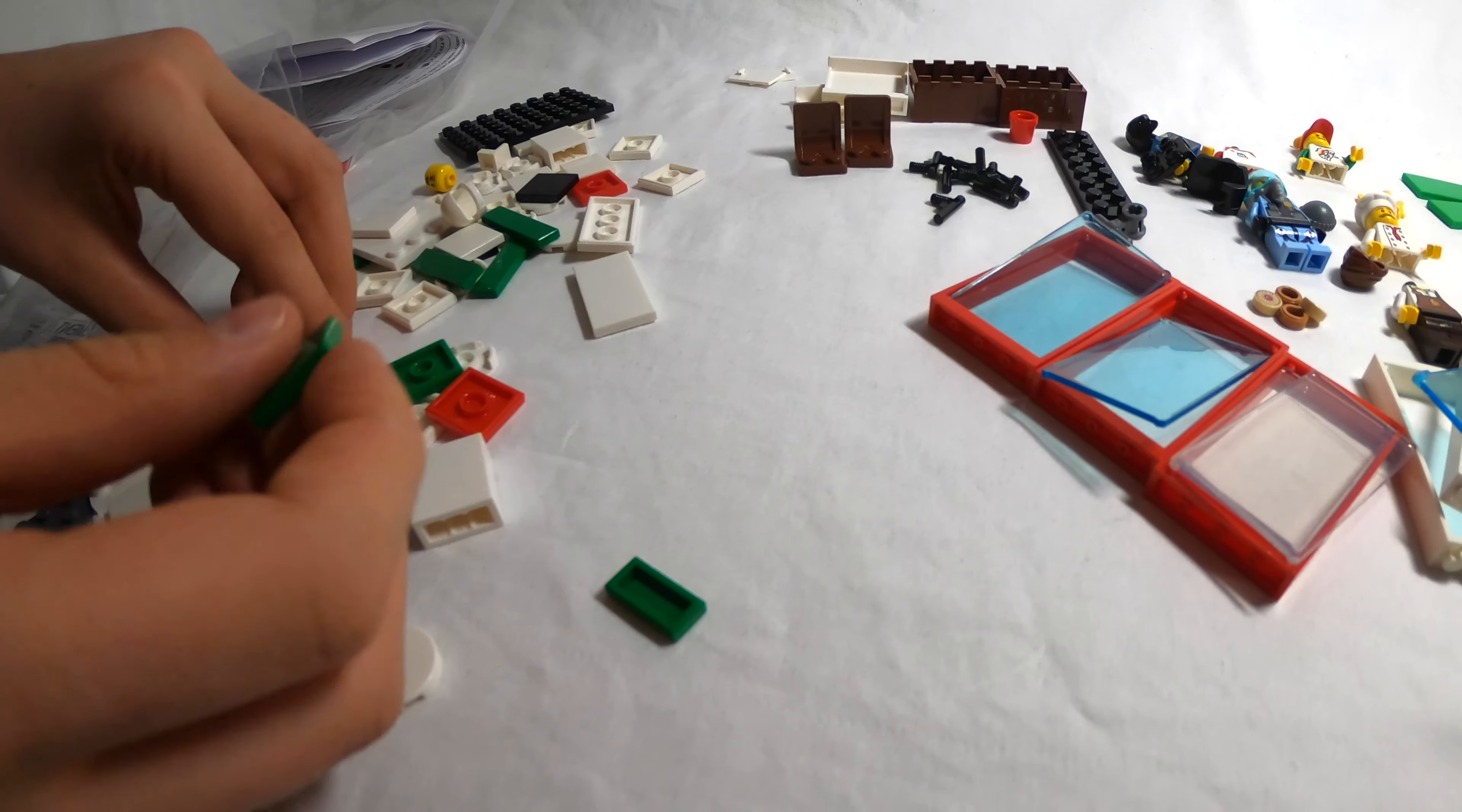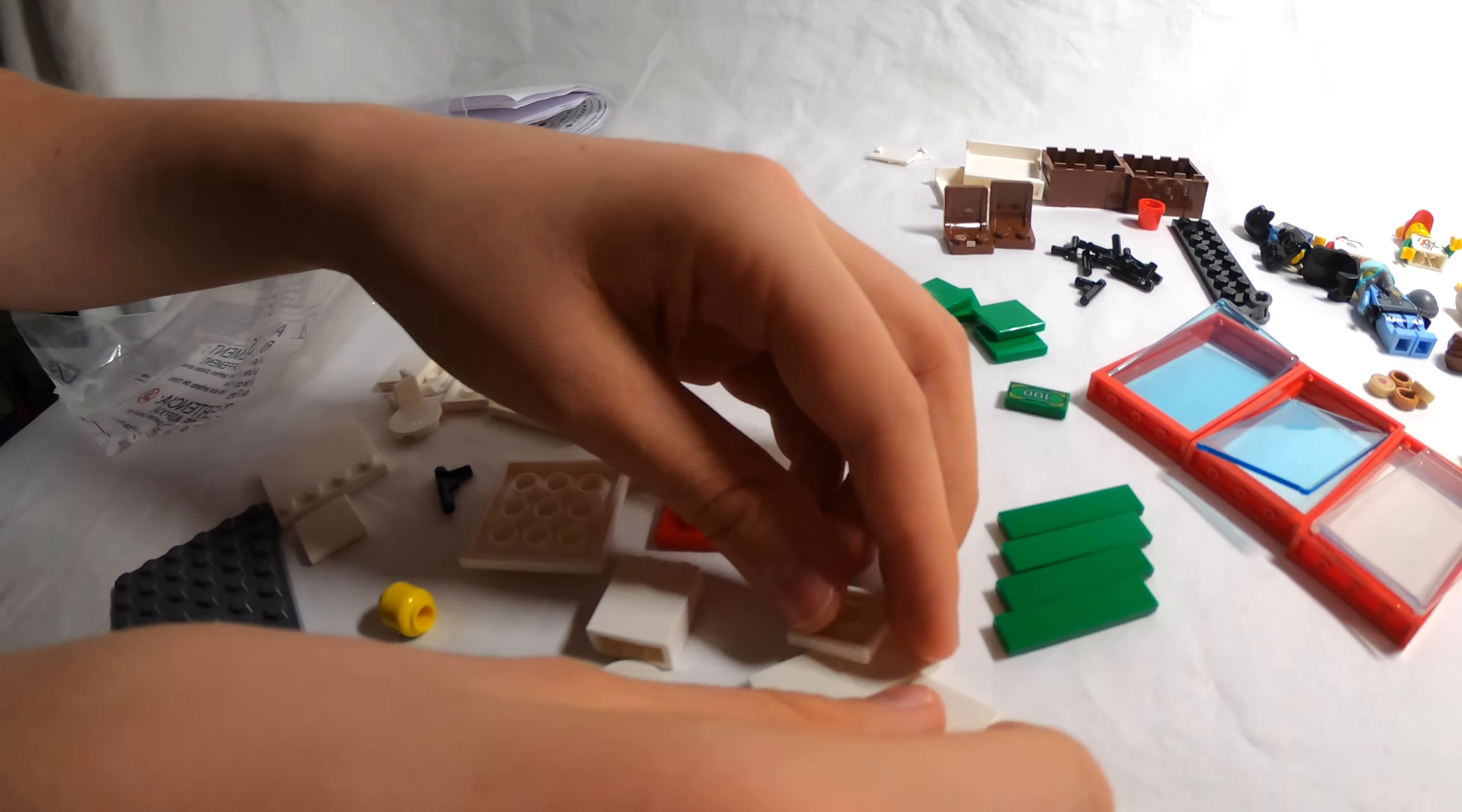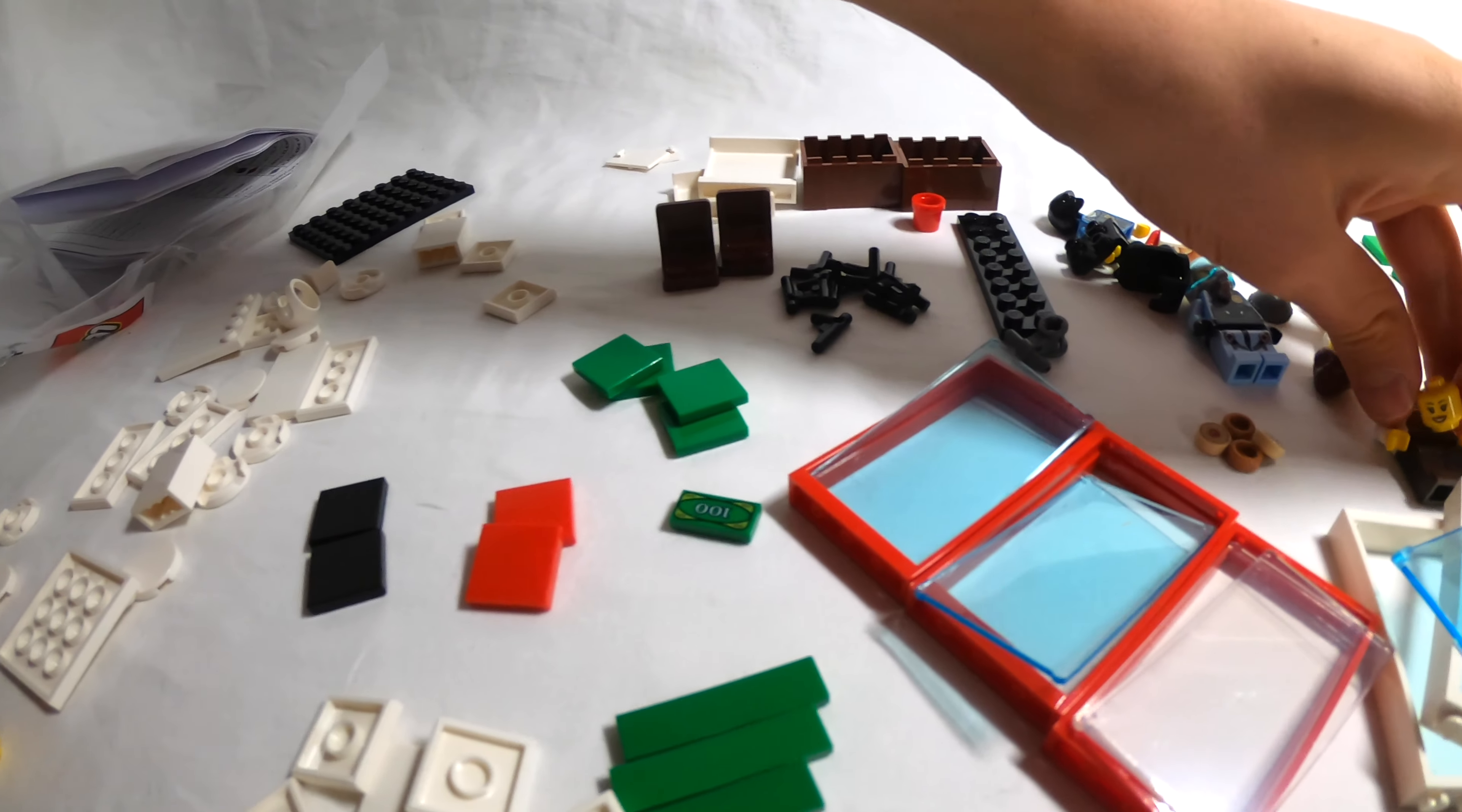We got tons of tiles here. So, two by twos of green. One by two green. One by four green. Oh, this is actually a dollar bill. So, we'll be using that. Robbers will probably steal it or something. Two by twos of white. Lots of those. Two by twos of red. Two by twos of black. And then there's a lady face for the coffee lady.